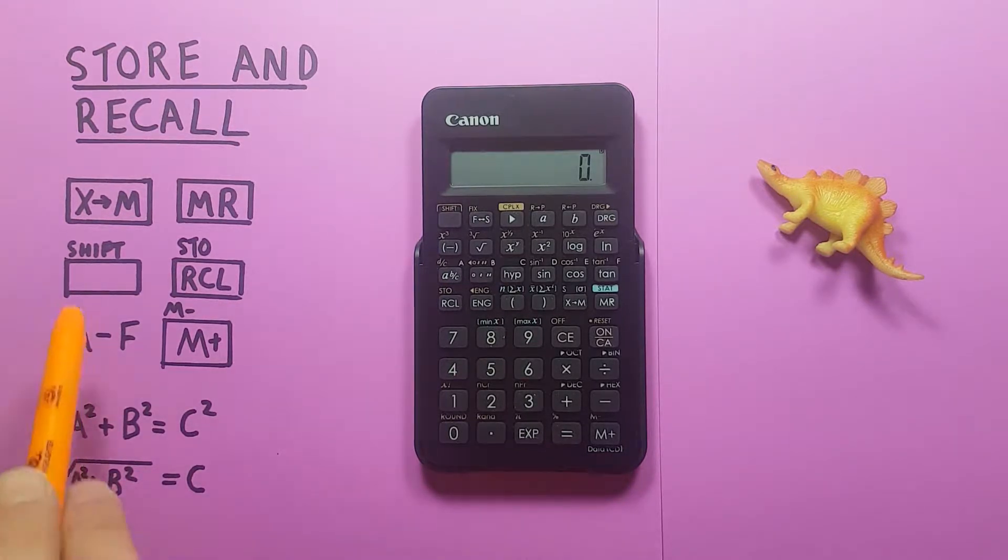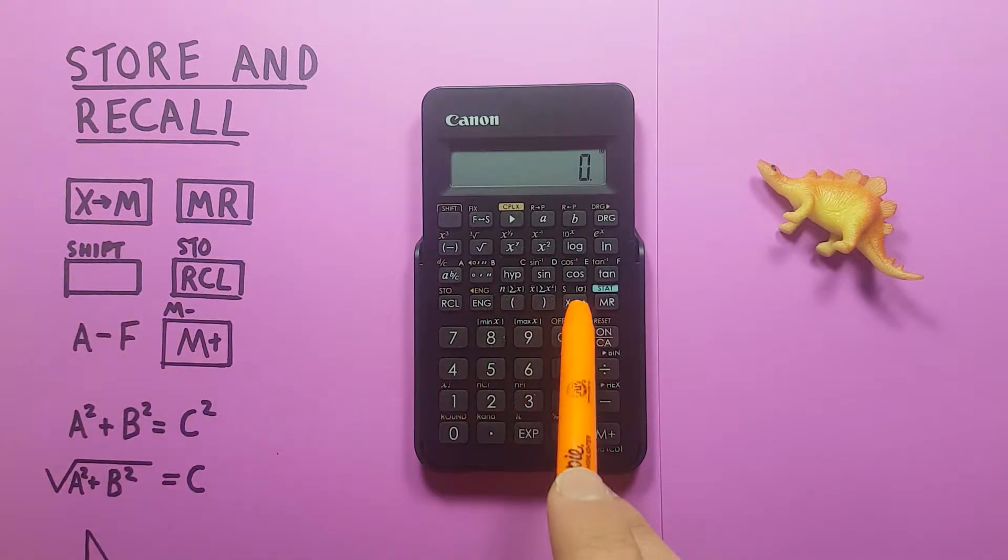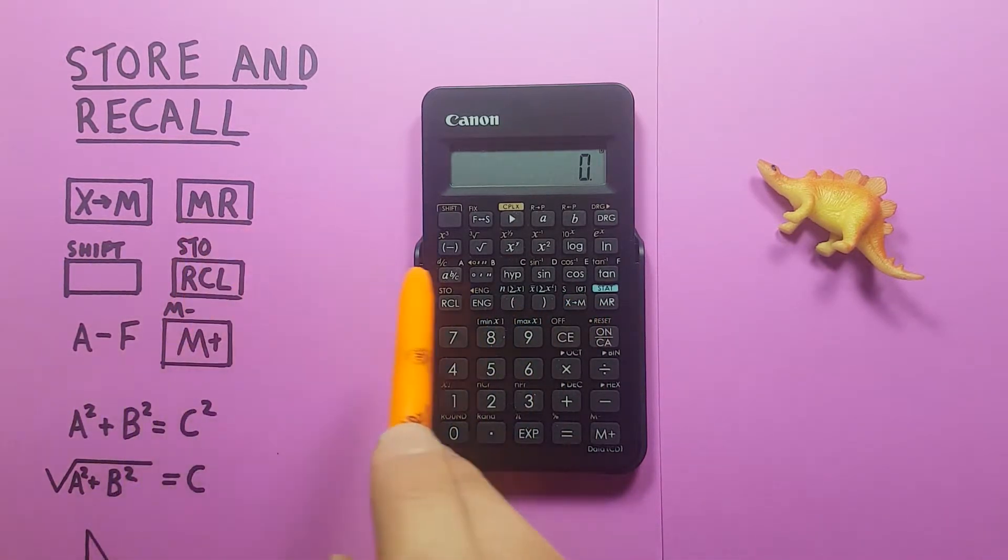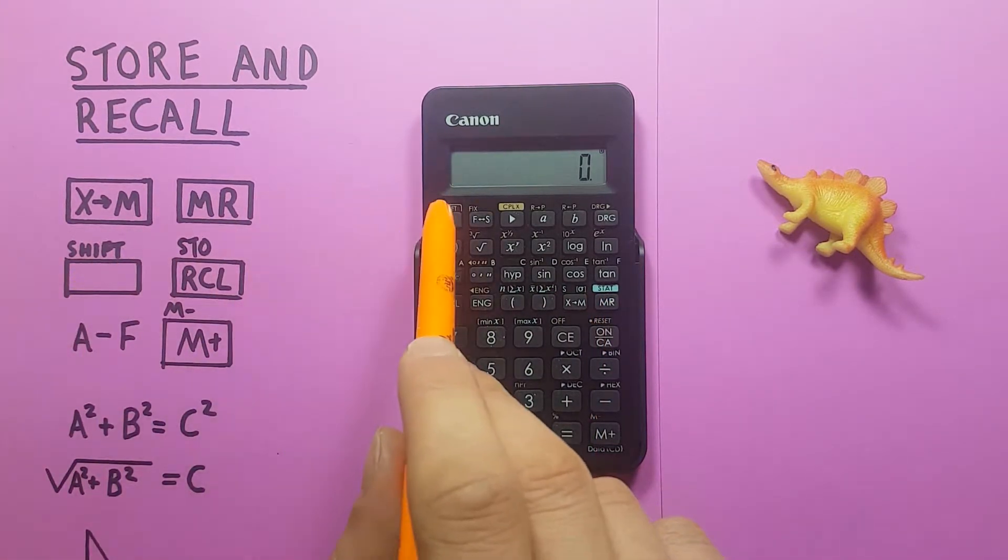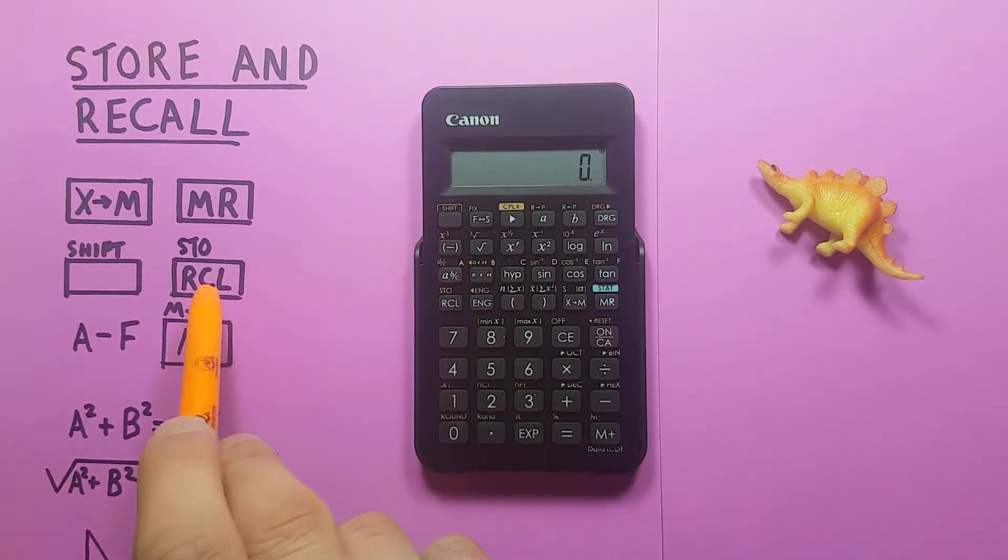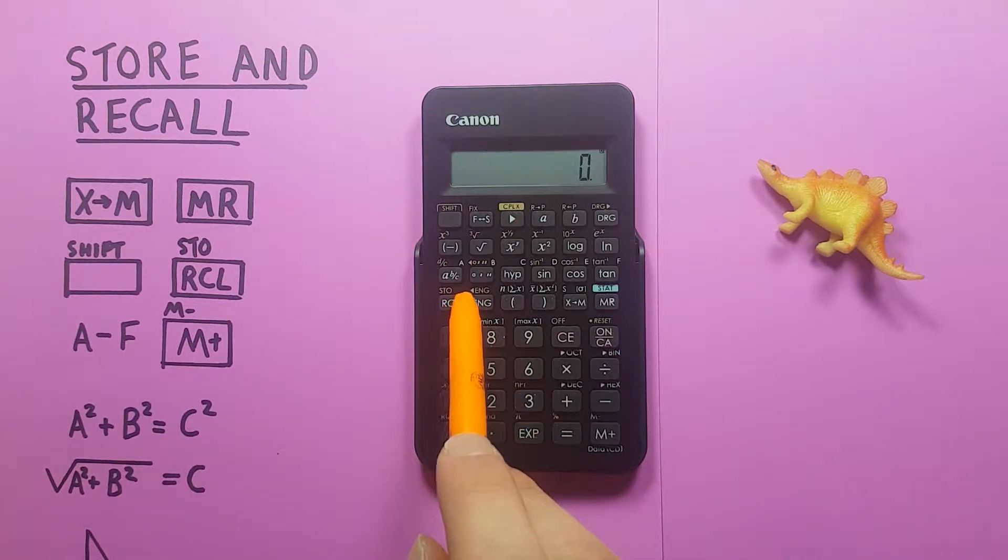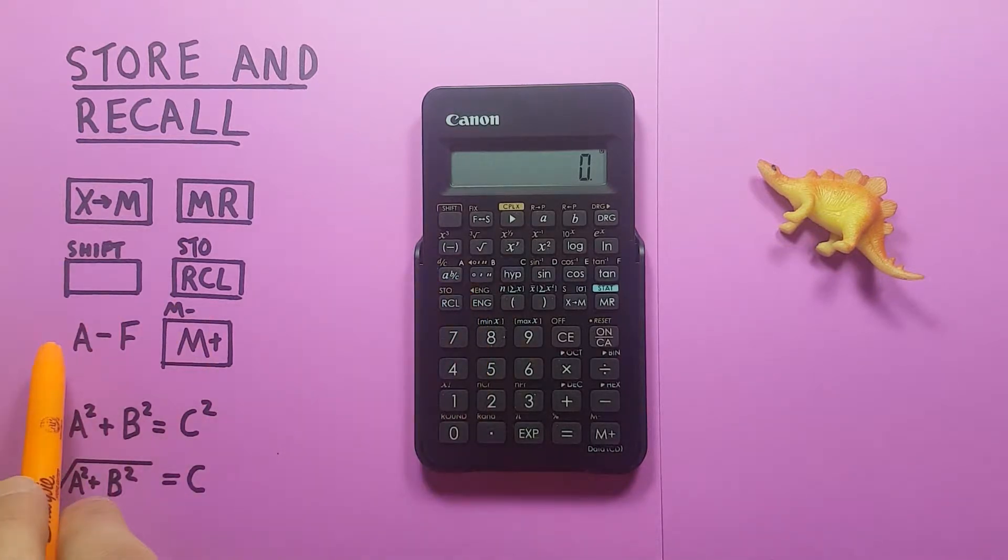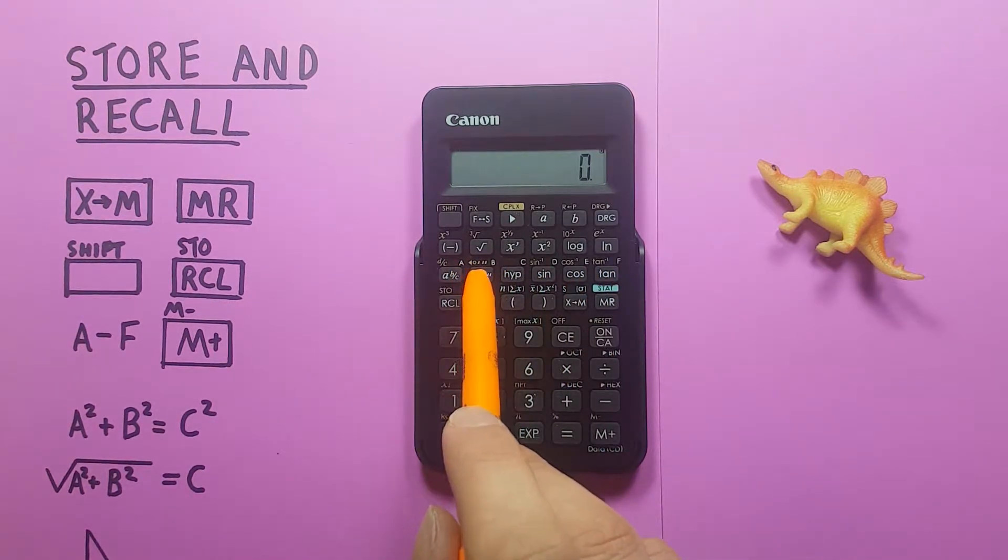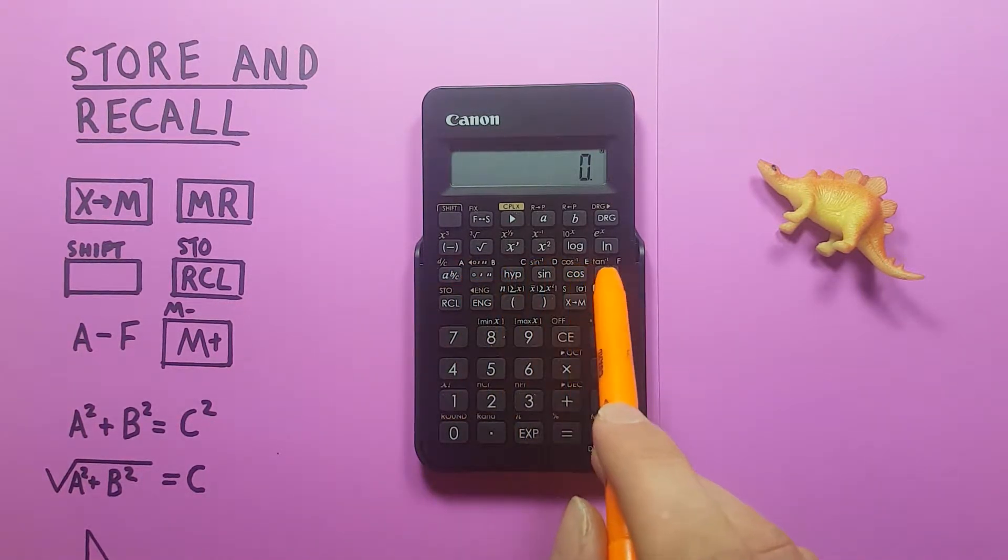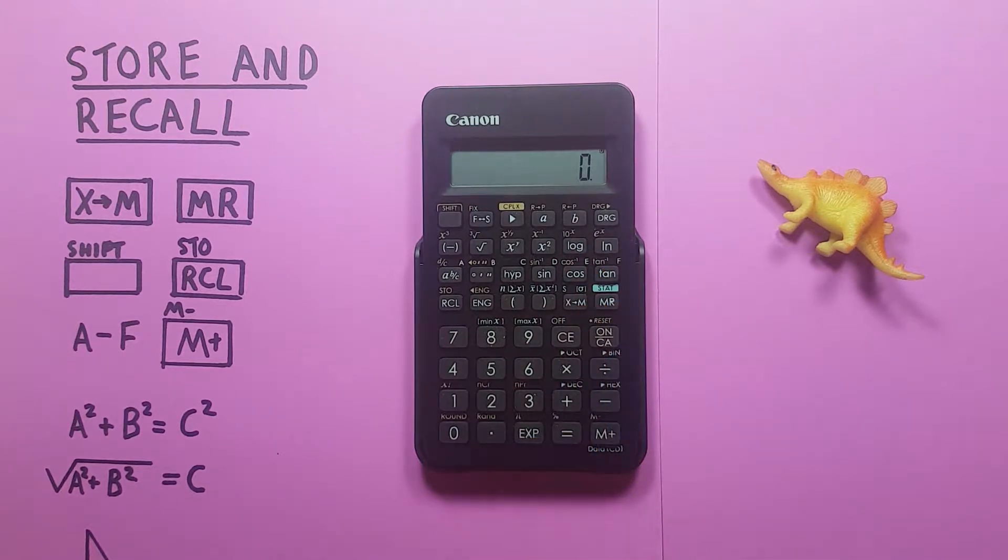To do this we'll be using the X to M key located here, the MR key located here, the shift key or second function key located up here, the store and recall key located here, the A through F variable keys which are here on this row in the top right corner, A, B, C, D, E and F, and finally the M plus and minus key down here.